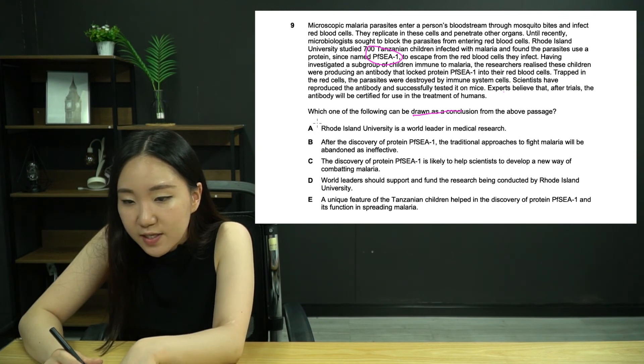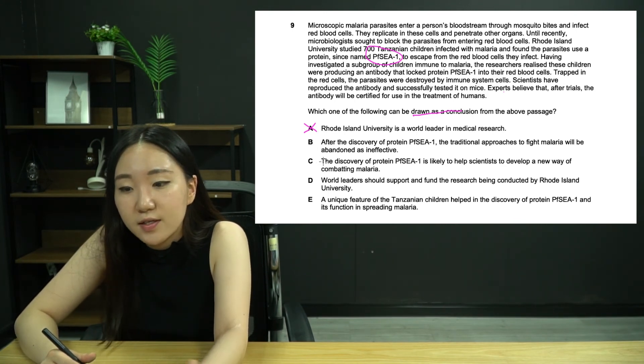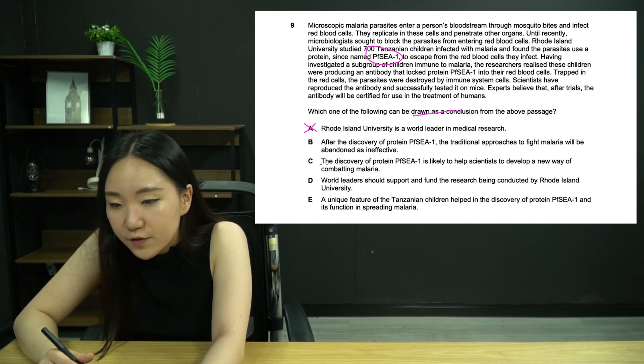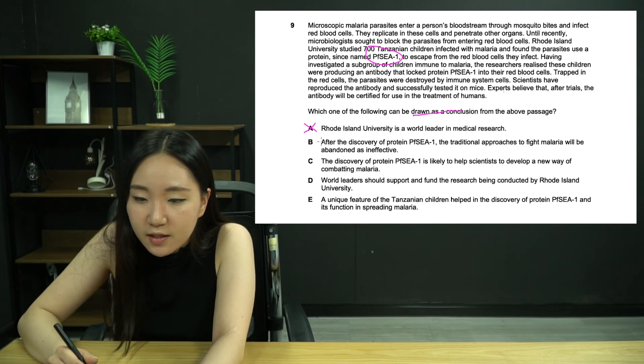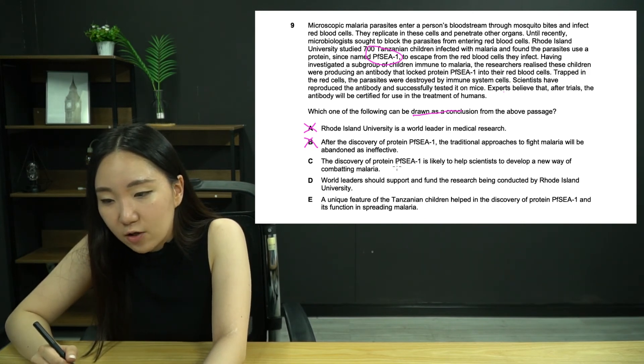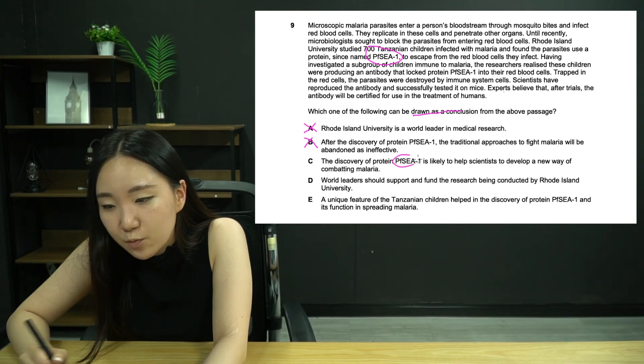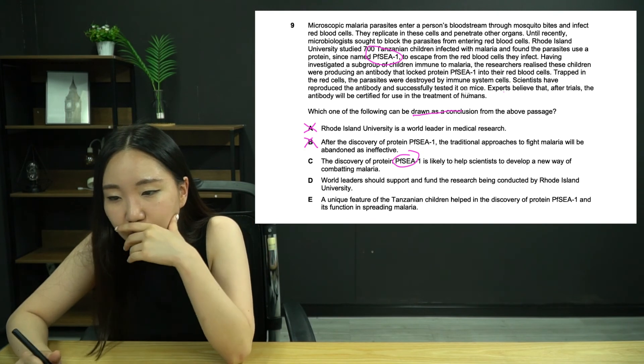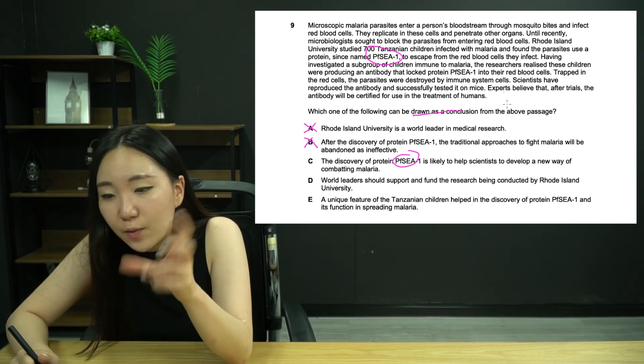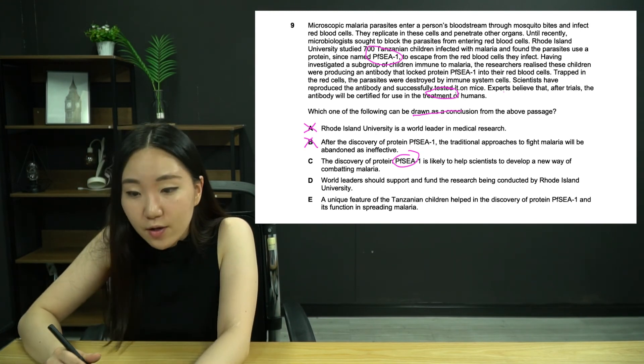There's a protein, PfCA1, and they use this to escape the red blood cells to infect. Then we look at a different group of children who are immune. They've got an antibody that stops or locks this protein into the red blood cells. This traps the parasites inside and then they're destroyed. Scientists have since reproduced this, they test it on mice. Experts believe that after trials, we can use this for treatment in humans. Now let's see what we can draw as a conclusion.